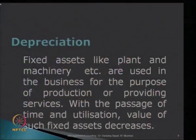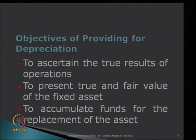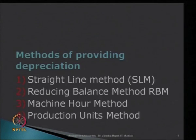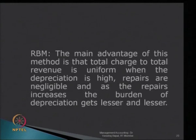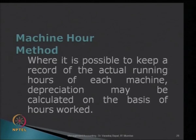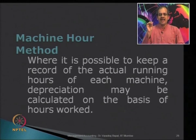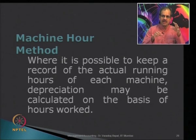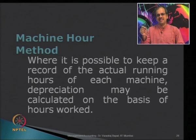Let us now look at the third method, known as the machine hour method. Here, depreciation is charged based on the actual use of the asset, because depreciation is basically meant to be a charge on use. We try to charge it for the number of hours the asset is used. A precondition is that there must be proper recording of the number of hours used each day and each month.